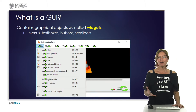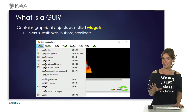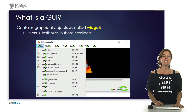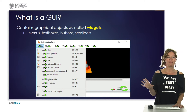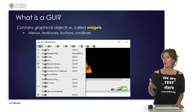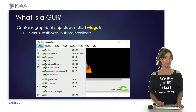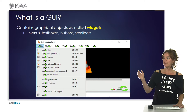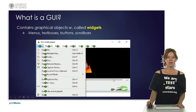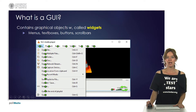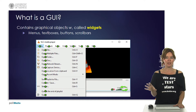Now let's see what graphical user interface testing is, starting with explaining what a graphical user interface is. A graphical user interface contains graphical objects that we call widgets. Widgets are, for example, menus, text boxes, buttons, scroll bars, etc. On the slide you see an example of the graphical user interface of the VLC application. Here we have a menu with all kinds of buttons we can click on, a sliding widget, and some other buttons. All these graphical objects together are the widgets of the graphical user interface.